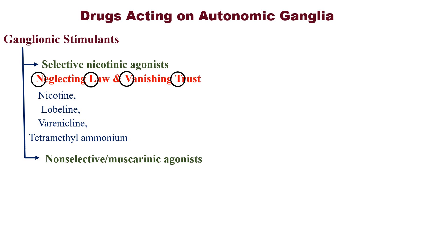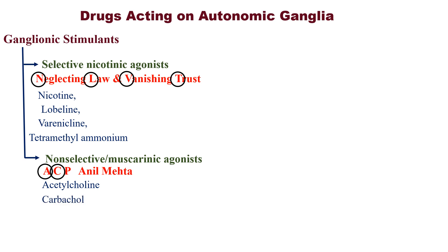Under non-selective or muscarinic agonists, think about who will take action against these criminal gang supporters or stimulants. It is ACP Anil Mehta. A for Acetylcholine, C for Carbachol, P for Pilocarpine, A for Anti-cholinesterases, M stands for MCN-343.